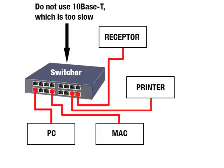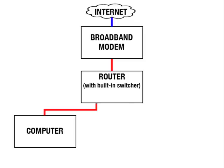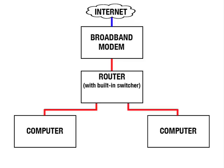10BaseT switchers are too slow for most receptor applications. Many networks, particularly those with a broadband modem, contain a device known as an Ethernet router. Routers let multiple computers share a single internet connection and they contain DHCP servers, which means that they will provide IP addresses to all the Ethernet devices in a network.